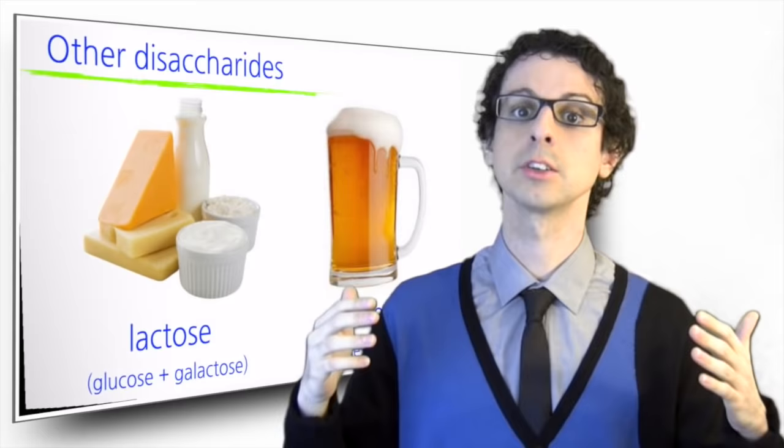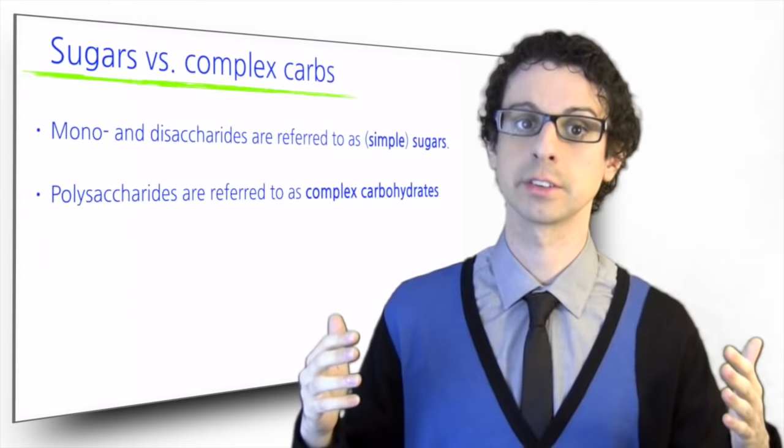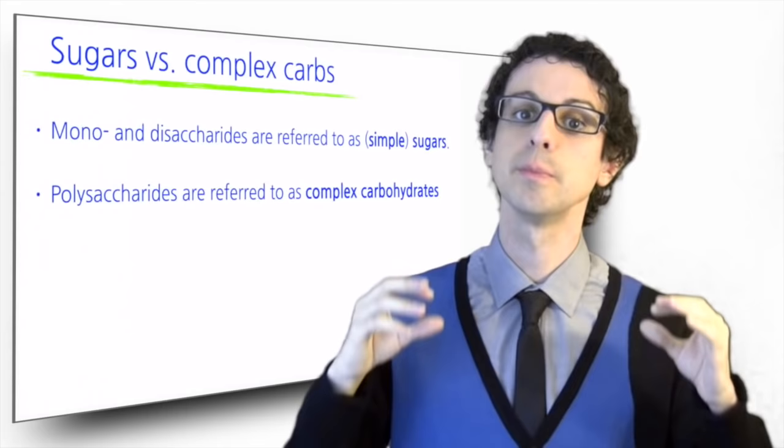Monosaccharides and disaccharides are referred to as sugars, or simple sugars, to distinguish them from longer chain carbohydrates, which are called polysaccharides, or complex carbohydrates, and are made of many sugar units.